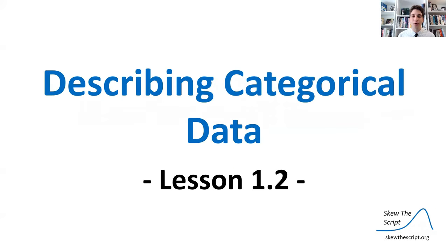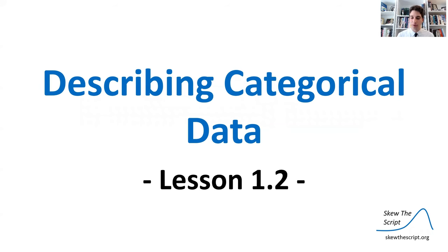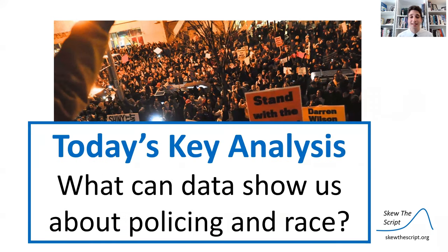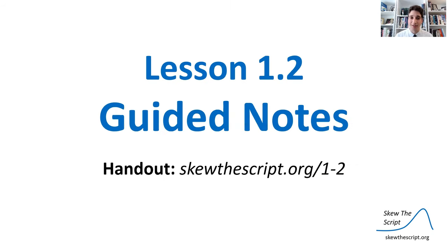Today's lesson is on describing categorical data — this is lesson 1.2 in our course sequence. There's been a long-standing national conversation about policing and race in the United States. It's an important conversation, and when we see data presented on it, it's our job as statistically-minded citizens to analyze that data openly, honestly, and productively. Today's key analysis is: what can data show us about policing and race?